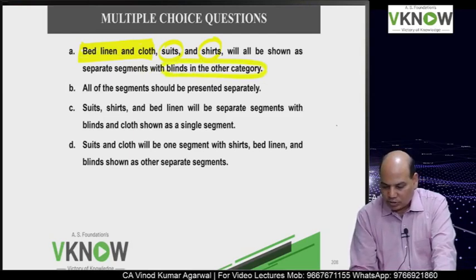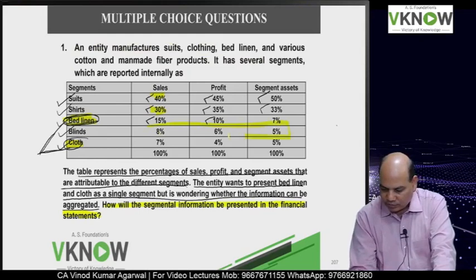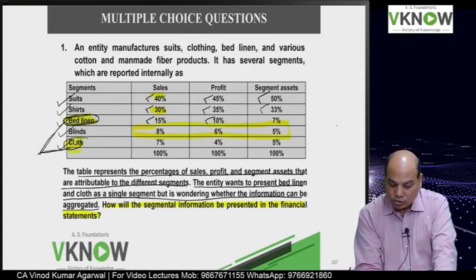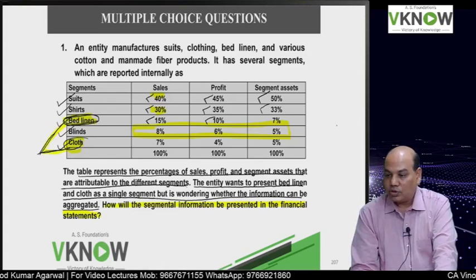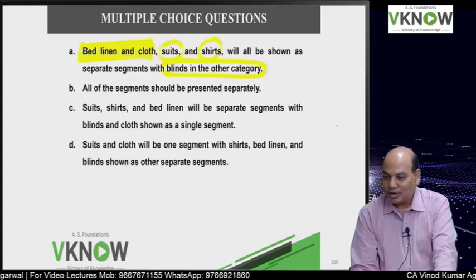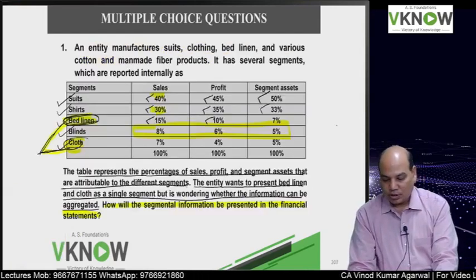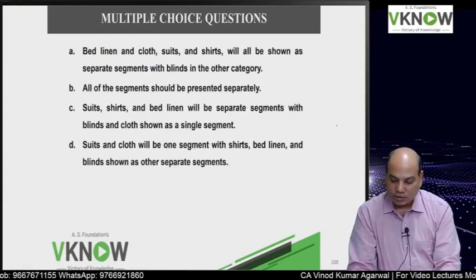Suits and shirts qualify - they have 10% or above. Blinds do not satisfy any of the 10% criteria. Management wants to aggregate bed linen and cloth - you have to read IND AS 108 to get the answer on whether they can be aggregated. Option B - all segments presented separately - that cannot be the answer because blinds do not meet any of the 10% requirements.